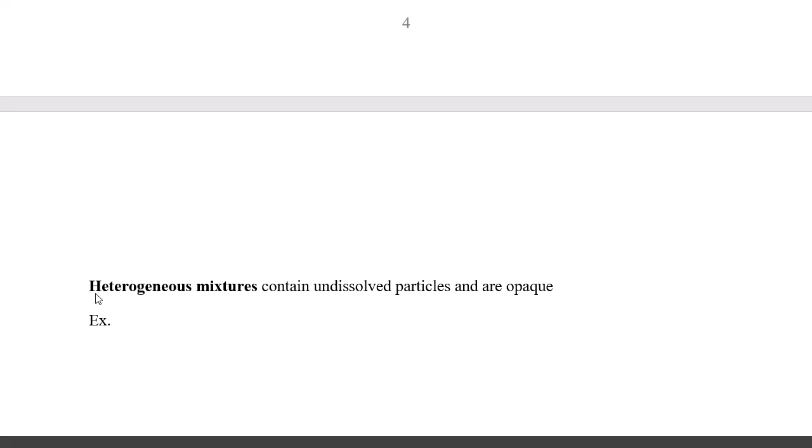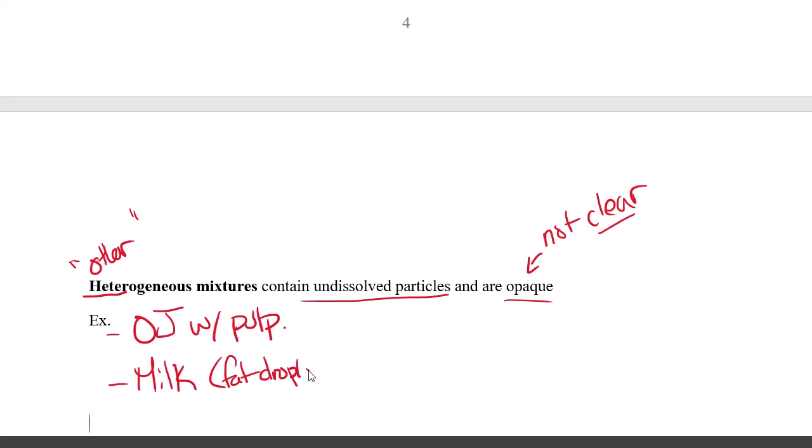Heterogeneous mixtures, as opposed to homogeneous, heteros, meaning other parts that are visible, contain undissolved particles. They're opaque, meaning that they are not clear. You can't see through them. So examples here, some that we've said already. Orange juice with pulp would be an example. Milk is a heterogeneous mixture. It's opaque. And that's because even though it seems at the large scale like it is clear, it's got fat droplets. Teeny tiny fat droplets in it that are not fully dissolved. Because the fats are non-polar, they don't dissolve very well in the polar water. And that's why it would be considered a heterogeneous mixture.